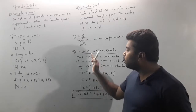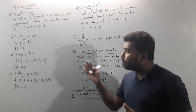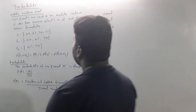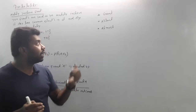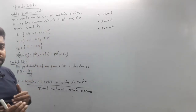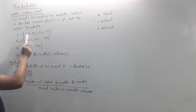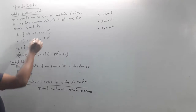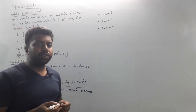If two events occur simultaneously, that is called a mutually inclusive event. Mutually exclusive events: if two events do not occur simultaneously. Mutually inclusive events: if they have a common element and they occur simultaneously. For example, sample space is HH, HT, TH, TT. Let E₁ be {HH, HT, TH} and E₂ be {HT, TH} — they share common elements HT and TH.